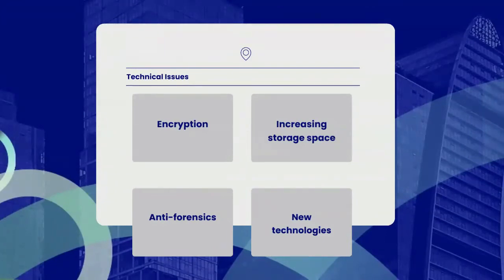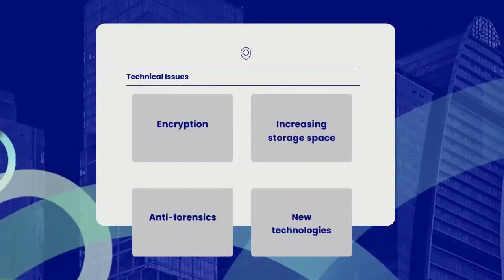The first type of technical issue is encryption. Encrypted data can be impossible to view without the correct key or password. Examiners should consider that the key or password may be stored elsewhere on the computer, or on another computer which the suspect has access to. It could also reside in the volatile memory of a computer, which is usually lost on computer shutdown.